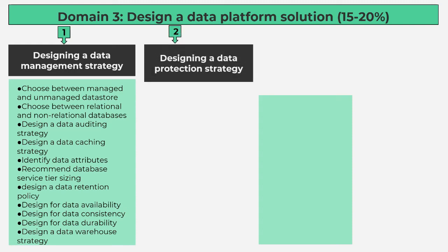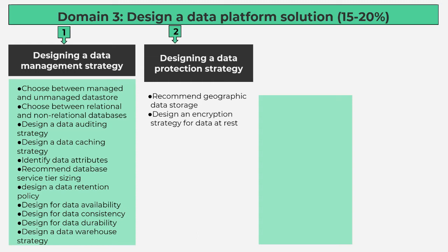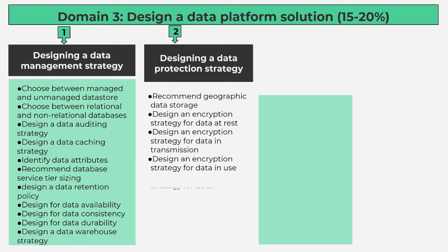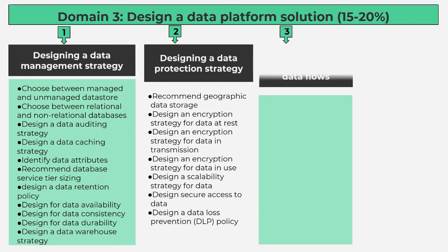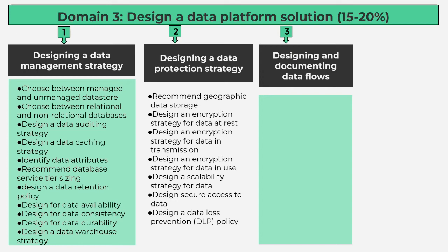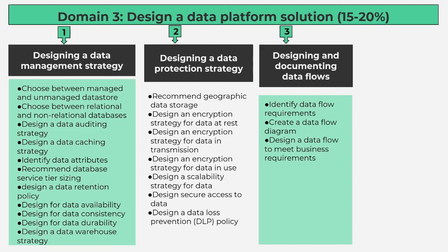Number 2, Designing a Data Protection Strategy contains 7 subtopics: recommend geographic data storage; design an encryption strategy for data at rest; design an encryption strategy for data in transmission; design an encryption strategy for data in use; design a scalability strategy for data; design secure access to data; design a data loss prevention policy. Number 3, Designing and Documenting Data Flows contains 5 subtopics: identify data flow requirements; create a data flow diagram; design a data flow to meet business requirements; design data flow solutions; design a data import and export strategy.